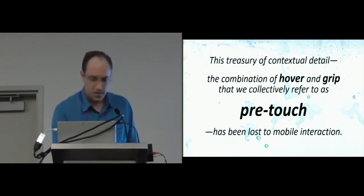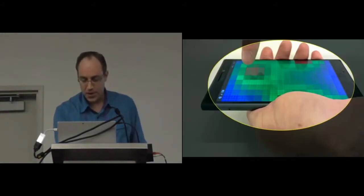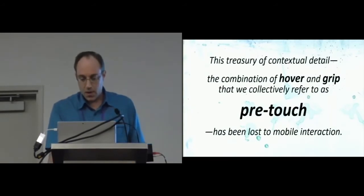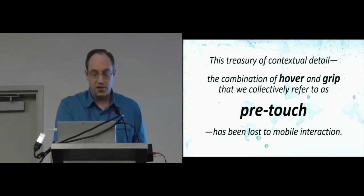So, we can kind of go from this view of touch as a point at a particular instant in time, and expand that out to this whole world that surrounds the device that's above and around the screen. And most critically, that's before the touch itself. So, this treasury of contextual detail, which is the combination of both hover and grip that we collectively are referring to as pre-touch, has been lost to mobile interaction. And note that carefully. I'm talking about both hover and grip.